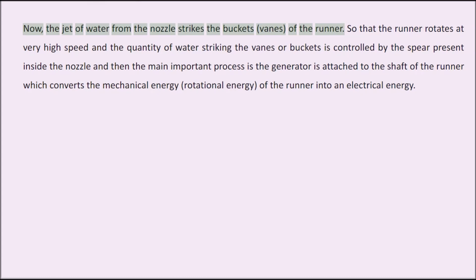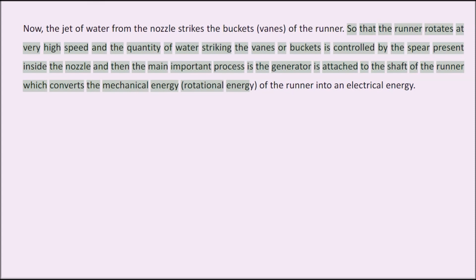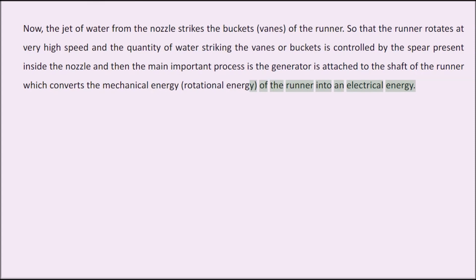The runner rotates at very high speed. The quantity of water striking the vanes or buckets is controlled by the spear present inside the nozzle. A generator is attached to the shaft of the runner, which converts the mechanical energy — the rotational energy of the runner — into electrical energy.